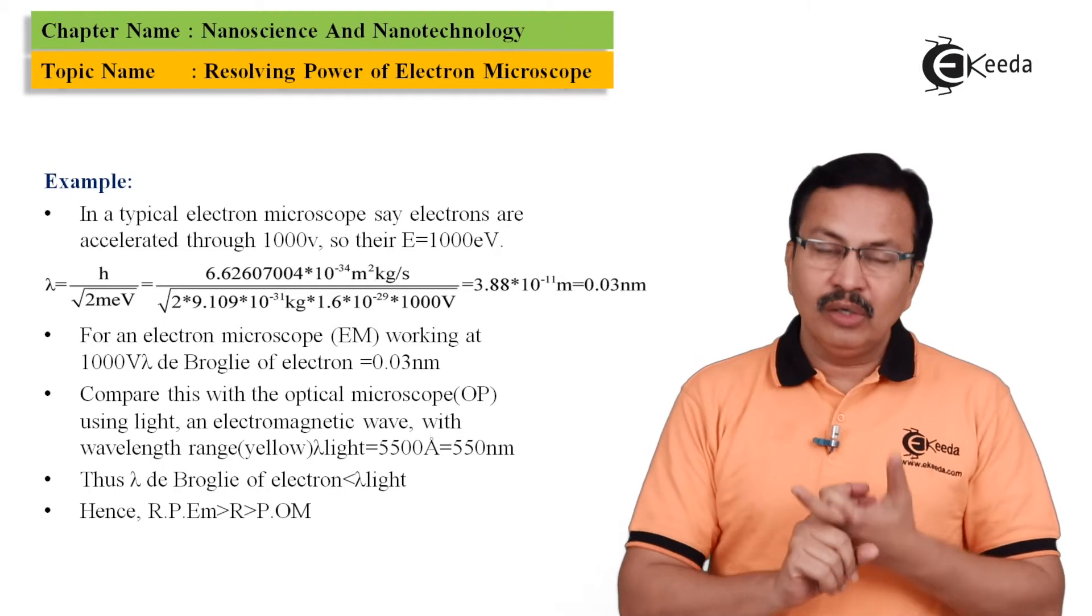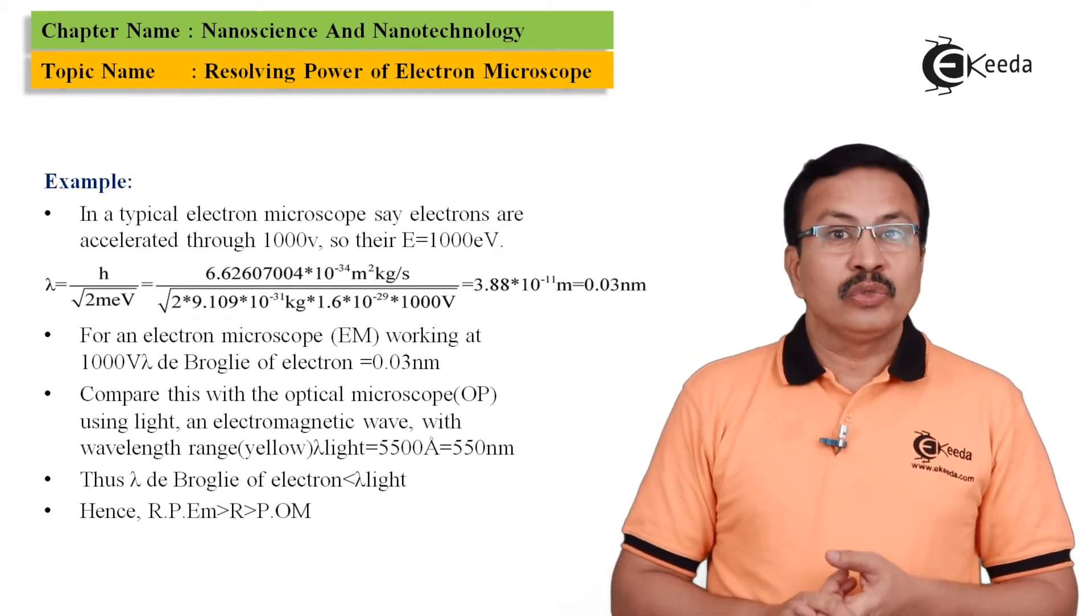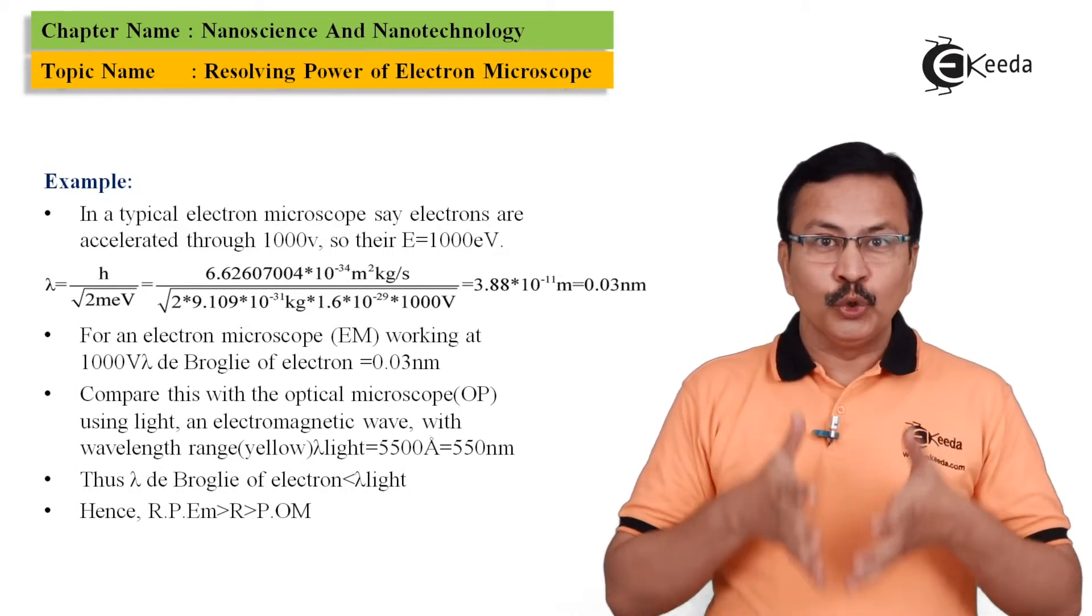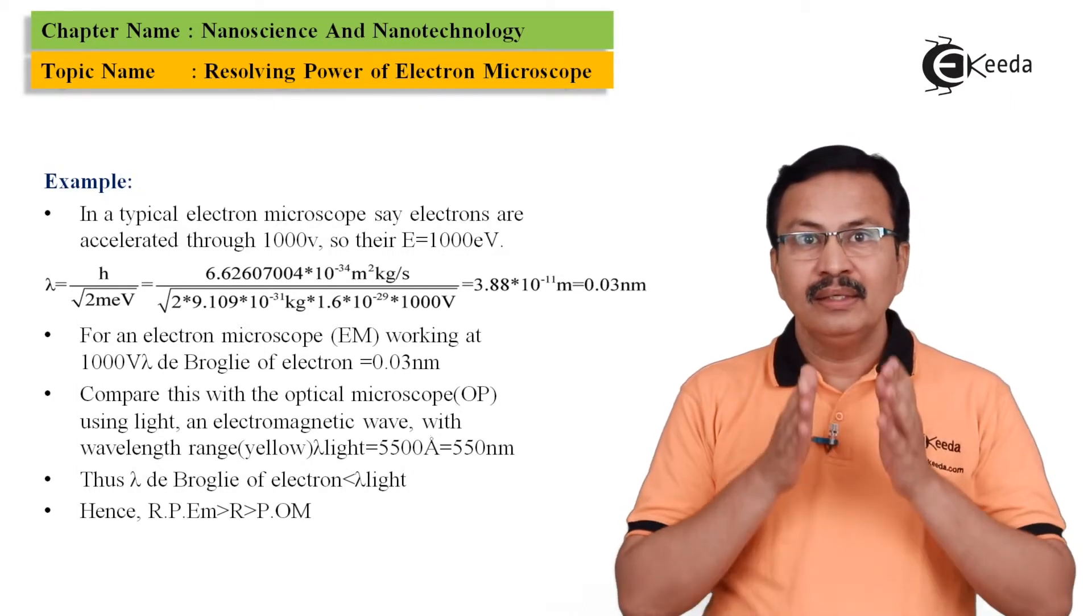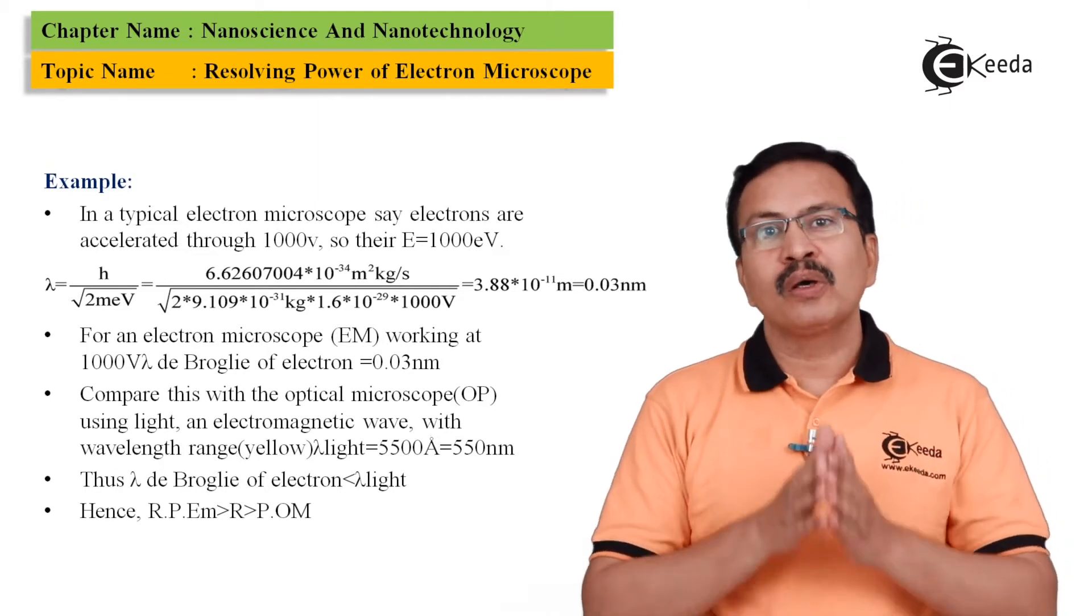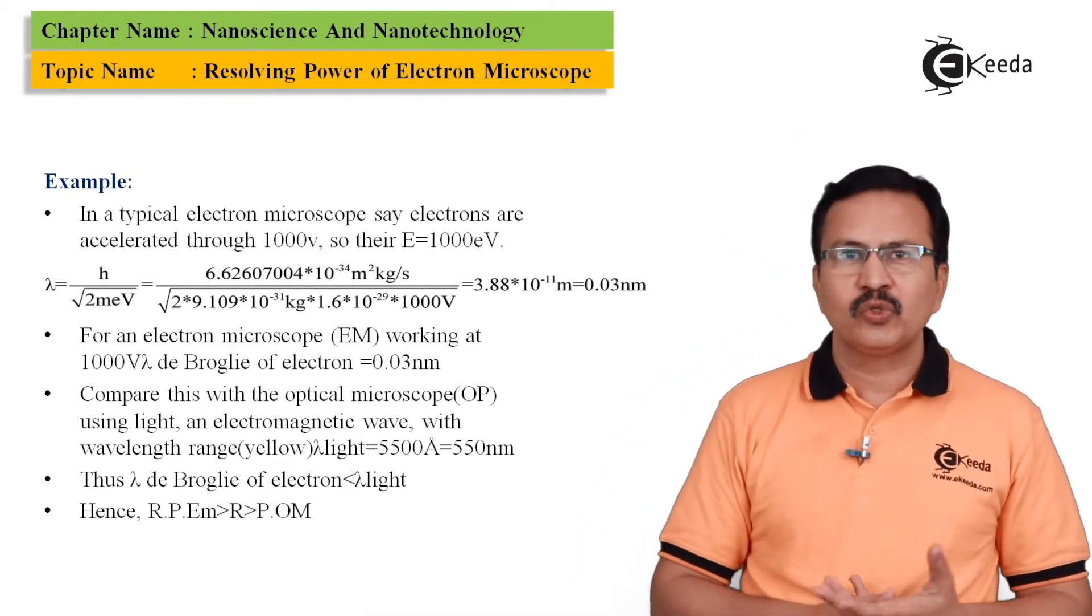Now, we have got the de Broglie wavelength for the electron. So, these are the electrons that I am going to use for analyzing any sample in a scanning electron microscope or a tunneling electron microscope. Both of them, of course, are electron microscopes.